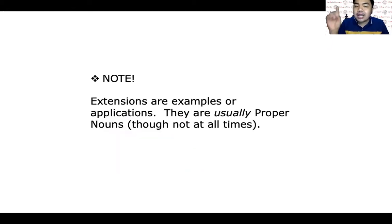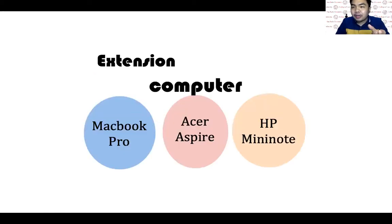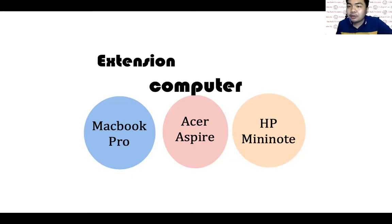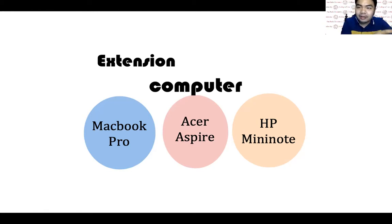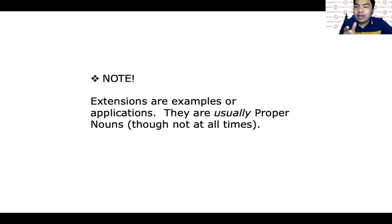Take note that extensions are examples or applications — they are usually proper nouns, though not at all times. For example, computer and MacBook Pro — MacBook Pro is the proper noun. Another example: school and St. Paul College of Ilocos Sur. St. Paul College of Ilocos Sur is an example or extension of the word school. So the proper noun is the extension. Another example: religion and Islam — Islam is a form of religion; it is a specific proper noun.